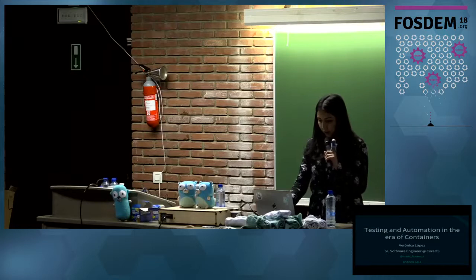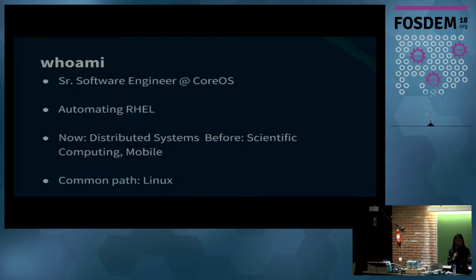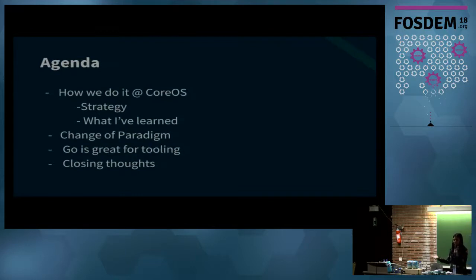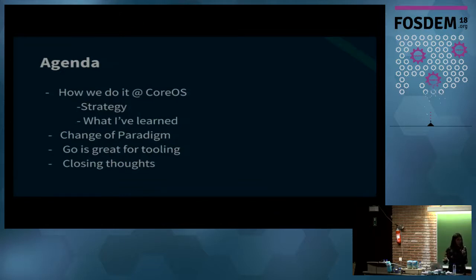I'm a senior software engineer at CoreOS, now Red Hat. I work on automating Red Hat Linux support for Tectonic, and in general I work with distributed systems. Before that, I worked in scientific computing and then mobile, but through all of this time I've always been using Linux. Kubernetes is like Linux for the cloud, so I'm really happy to be working with this. The talk will cover: how we do it at CoreOS - strategies that have worked and those that haven't - then what I've learned, a change of paradigm, why Go is great for tooling, and some closing thoughts.